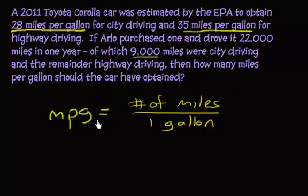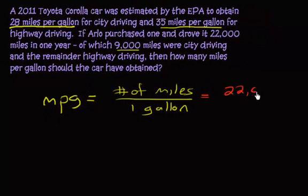So if you want to calculate Arlo's average miles per gallon, then we need to figure out the total number of miles. He's traveled, which we actually know. It's 22,000. So we're halfway there.